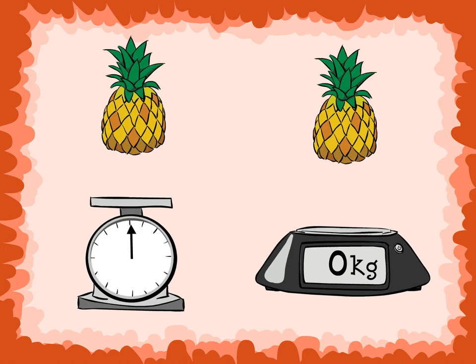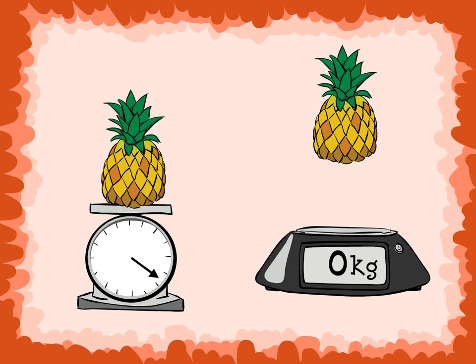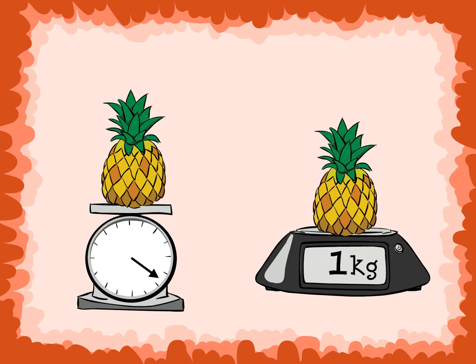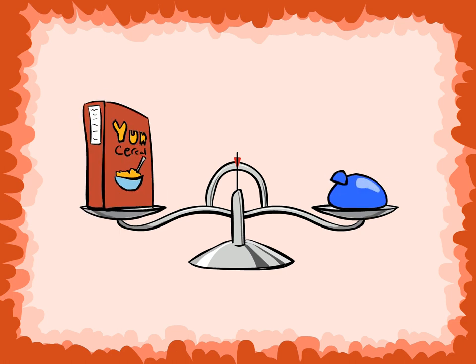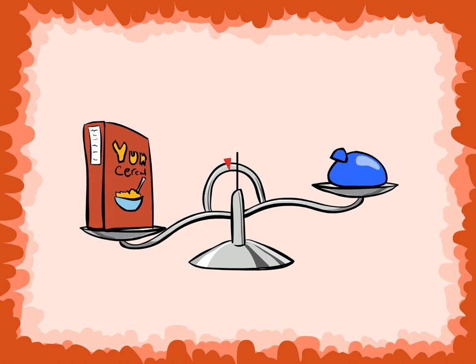Here is a pineapple on a spring scale and a digital scale. This is a balanced scale. By looking at the position of the objects on the scale, we can tell that the cereal box is heavier than the balloon.